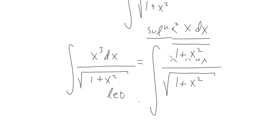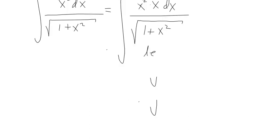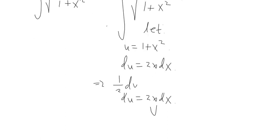Now I'm going to use the U substitution method. Let U equal to 1 plus X squared. That means my DU is equal to 2X dx. In the numerator we have an X dx factor. We need to get rid of the 2, so rearranging: 1 half DU equals X dx. So 1 half DU will be substituted for X dx.